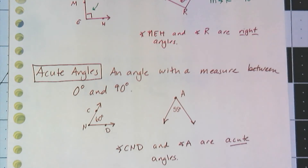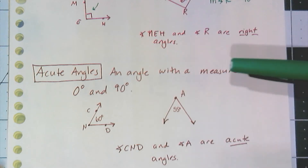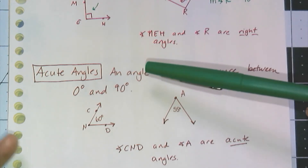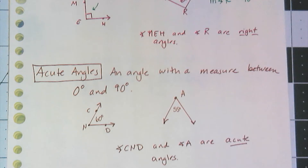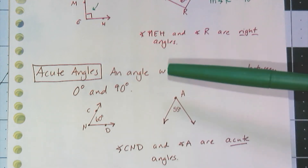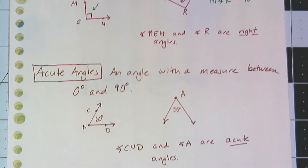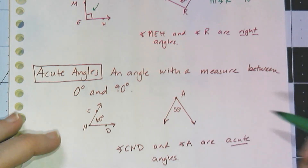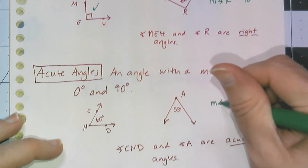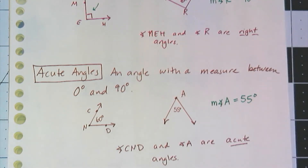Once you have right angles, you can look at angles whose measures are less than 90 degrees — those are acute angles. Specifically, an angle with a measure between 0 and 90 degrees is considered acute. These can be shown by putting the angle measure on the figure, by saying the angle is acute, or by using notation like 'the measure of angle A equals 55 degrees.' Because 55 is between 0 and 90, the reader knows angle A is acute.